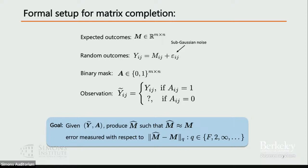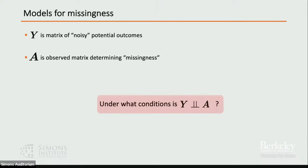Matrix completion has been studied for a long time. The focus of this talk is thinking about why data is missing. Y is your matrix of noisy potential outcomes; A is your observed matrix determining missingness. The key question is: under what conditions is your Y matrix independent of your A matrix? That's what we're going to explore.